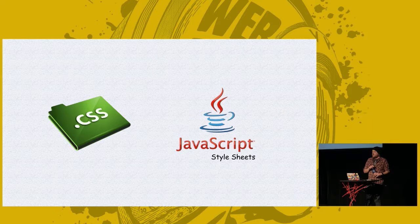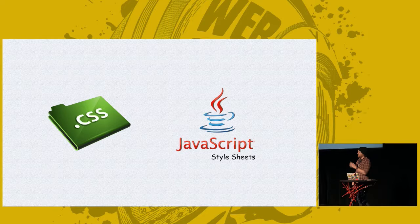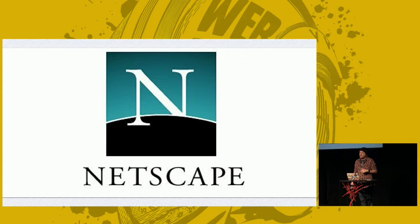I took a really bad JavaScript logo and added 'style sheets' in Comic Sans to the bottom — it only felt right. This is not the official CSS logo, but it felt appropriate to pick the worst one I could find. JavaScript style sheets are going to be the one we focus on — shipped in Netscape Navigator 4.0. And what we're going to do is a little bit of live coding.